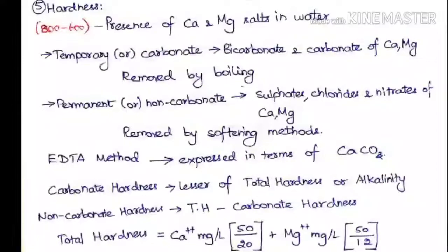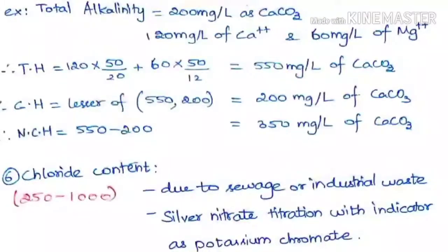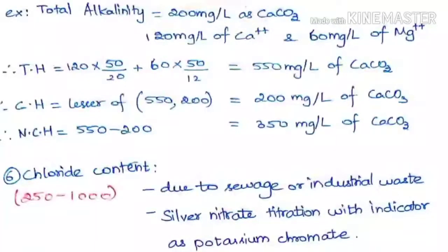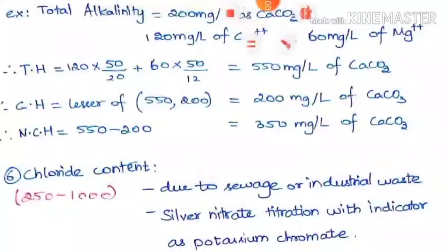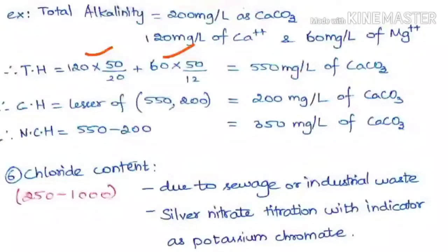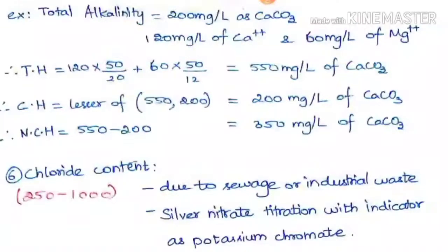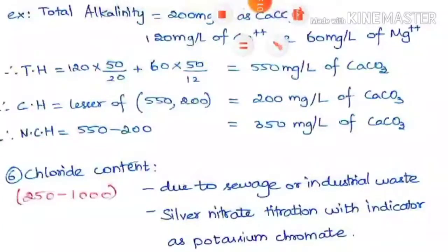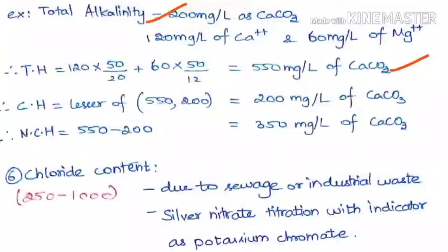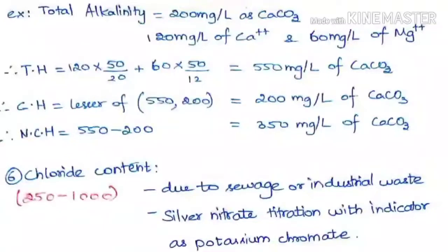Example: Total alkalinity = 200 mg/L as CaCO3, calcium concentration = 120 mg/L, magnesium concentration = 60 mg/L. Total hardness = (120 × 50/20) + (60 × 50/12) = 550 mg/L as CaCO3. For carbonate hardness, take the lesser of total hardness (550) and total alkalinity (200), which gives carbonate hardness = 200 mg/L. Non-carbonate hardness = 550 − 200 = 350 mg/L as CaCO3.